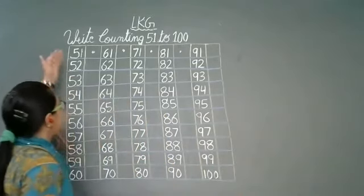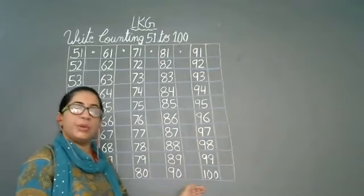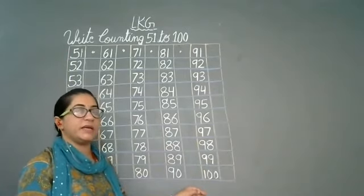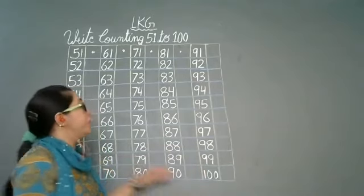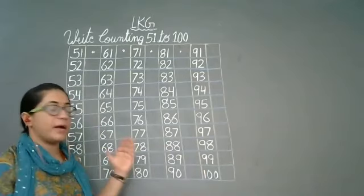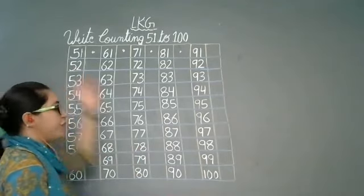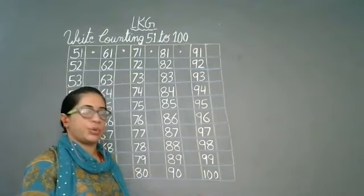Ho gya complete beta? 51 to 100. Simple hai. Nursery class mein aapne kya sikhi thi counting? 1 to 50. Aur abhi aap LKG mein aagay ho. Abhi aapne kya sikha? Kaha tak sikhi hai counting? 51 to 100. Ok?